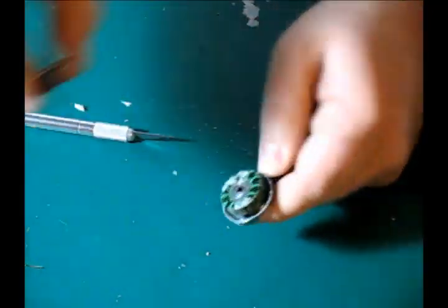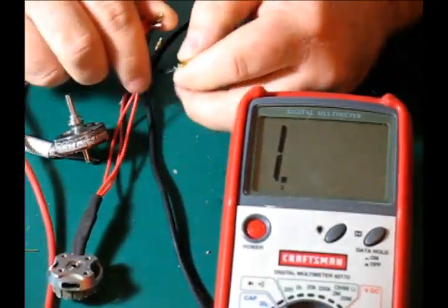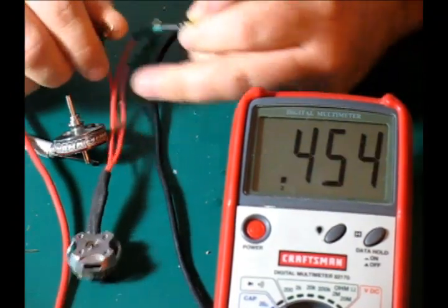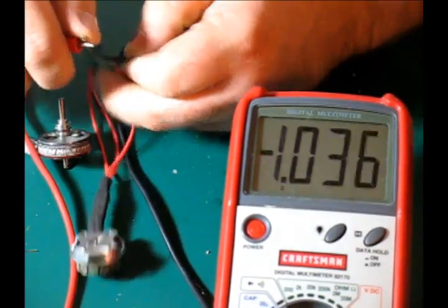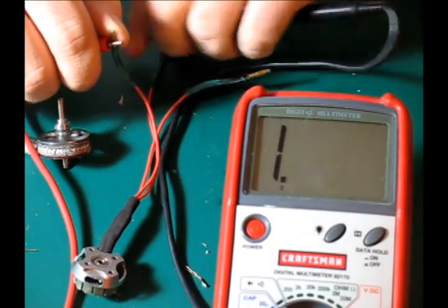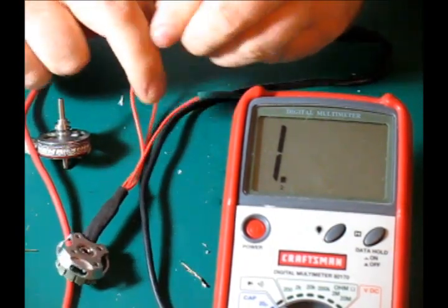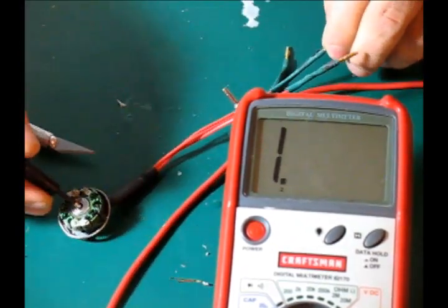After putting it back together, ensure you haven't shorted anything out by checking all three of your ESC leads and ensuring that they have a direct short between them. And then again, check them against the motor housing and stator and bearing walls to ensure that nothing shorted out during the press-in process.